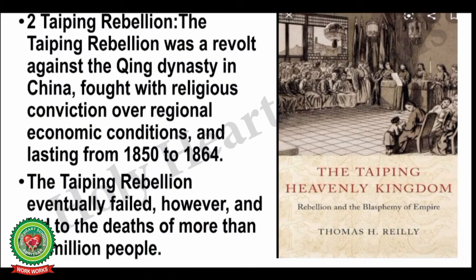The next term is Taiping Rebellion. The Taiping Rebellion was a revolt against the Qing dynasty in China, fought with religious conviction over regional economic conditions, lasting from 1850 to 1864. The Taiping Rebellion eventually failed and led to the deaths of more than 20 million people. Against the deteriorating economic conditions of China, the people started this rebellion against the Qing dynasty.